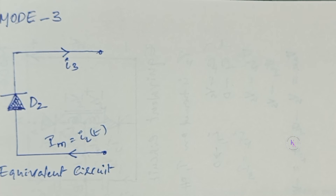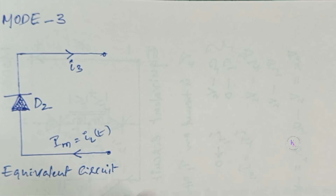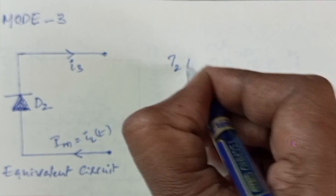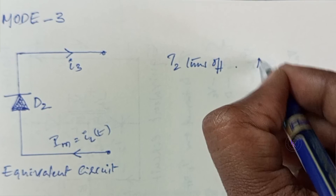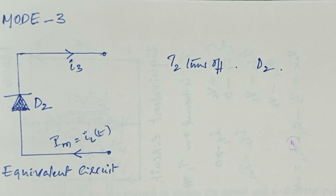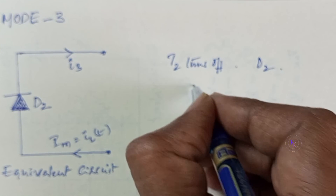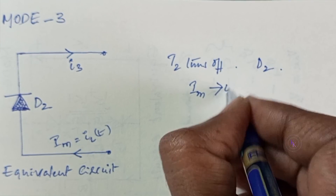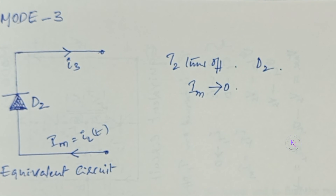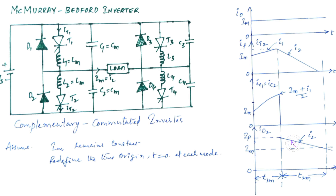Mode 3 begins when T2 turns off. Diode D2 continues to carry the load current until the load current IM falls to 0. The reverse anode-cathode voltage for T2 is provided by the forward voltage drop of diode D2. This completes the analysis of the McMurray-Bedford inverter, which is a complementary commutated inverter.